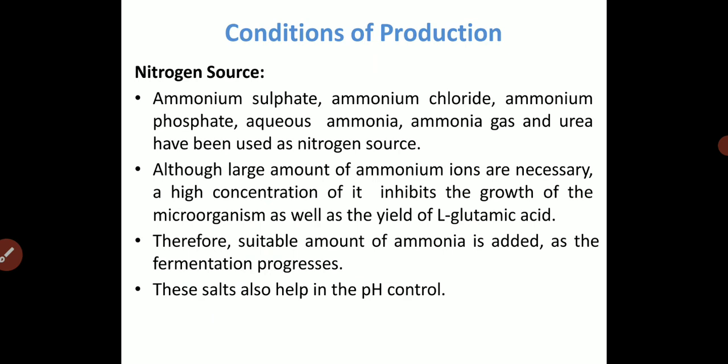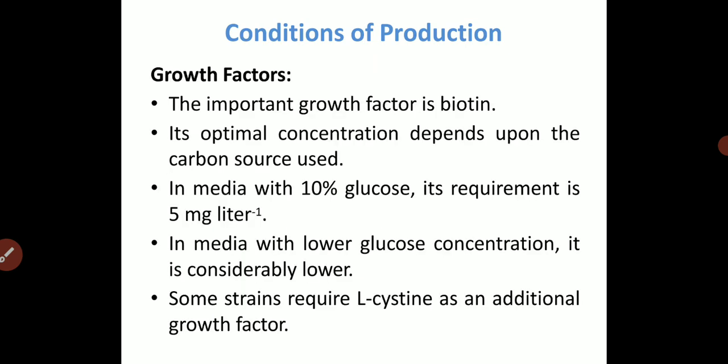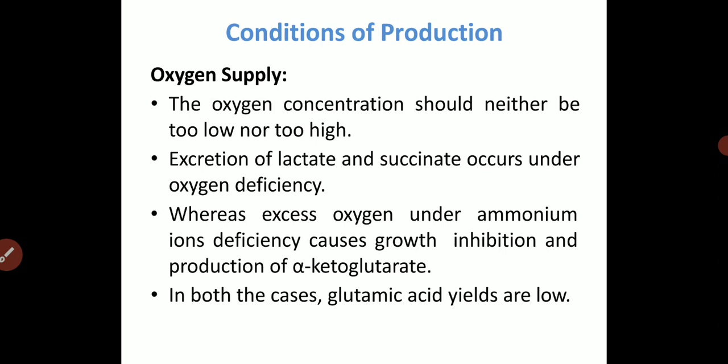The important growth factor is biotin, which is very important for the fermentation process and glutamic acid production. Its optimal concentration depends on the carbon source used — if 10% glucose is used, the requirement is 5 mg per liter. In media with lower glucose concentration, considerably less biotin is needed. Some strains require L-cysteine as an additional growth factor, which is an essential amino acid for that kind of microbial species.